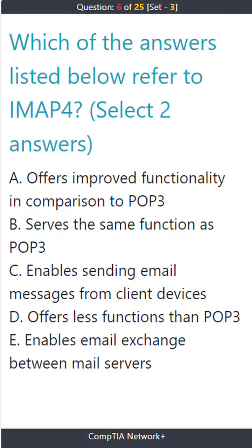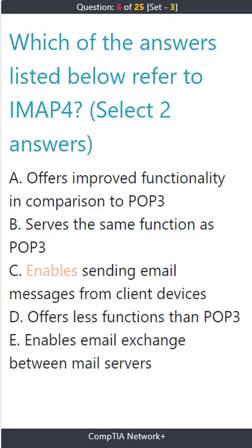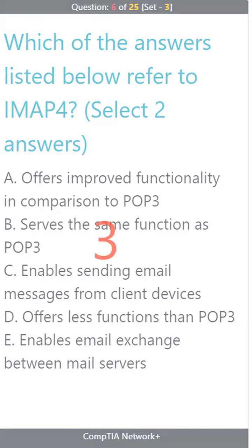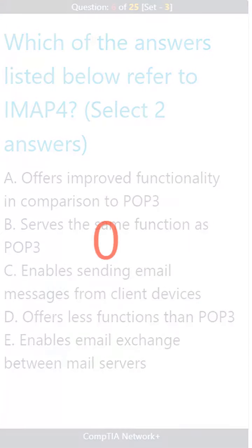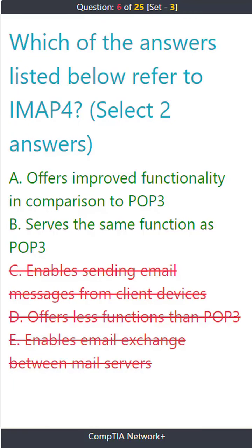Question 6. Which of the answers listed below refer to IMAP? Select two answers. A. Offers improved functionality in comparison to POP3. B. Serves the same function as POP3. C. Enables sending email messages from client devices. D. Offers less functions than POP3. E. Enables email exchange between mail servers. The correct answers are A. Offers improved functionality in comparison to POP3, and B. Serves the same function as POP3.